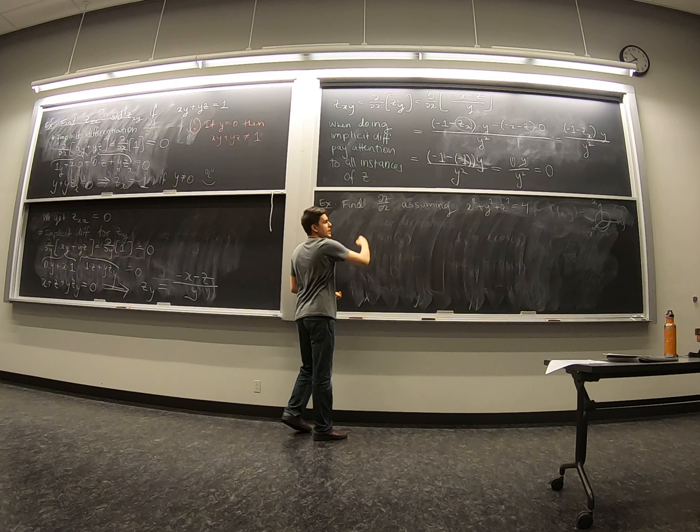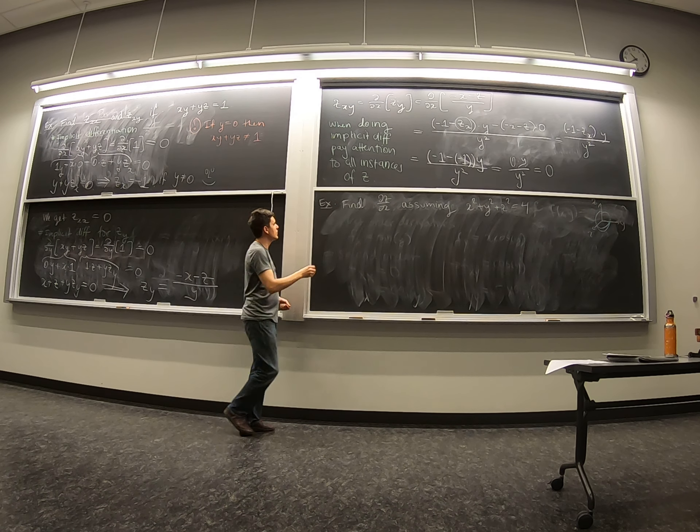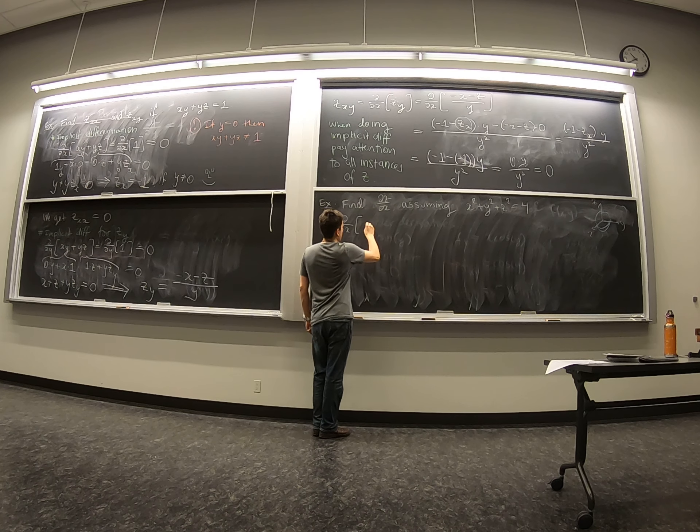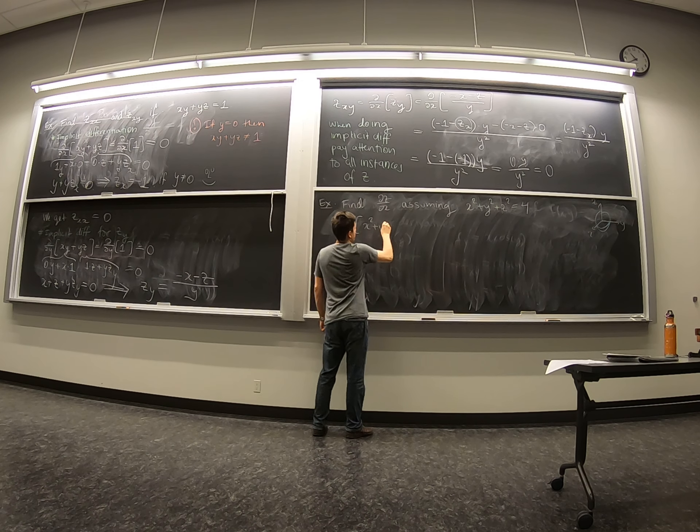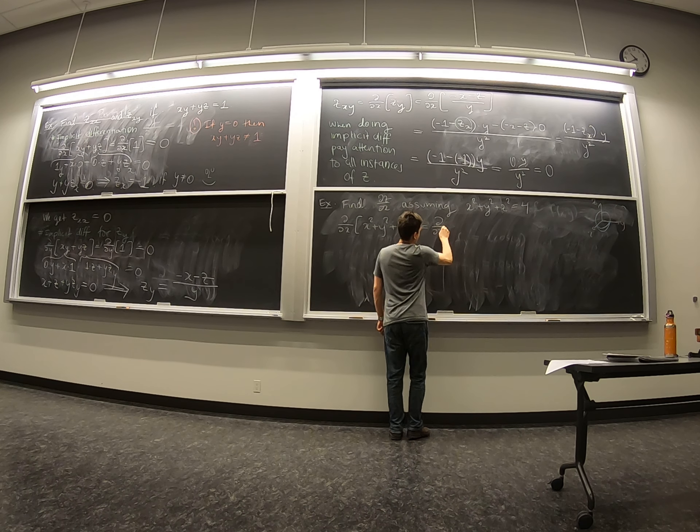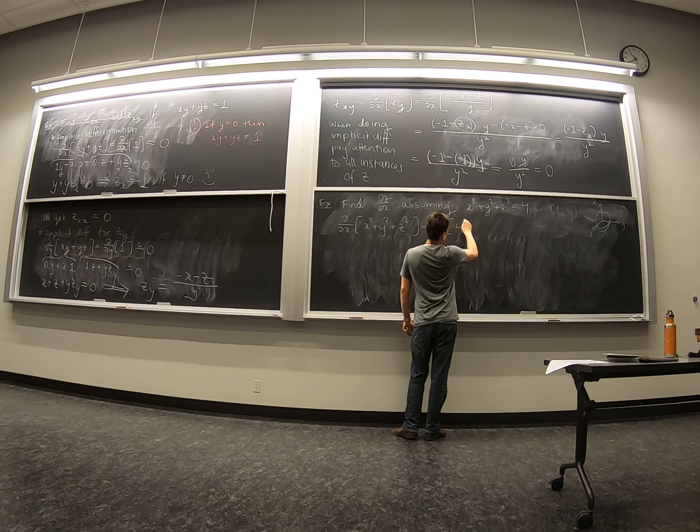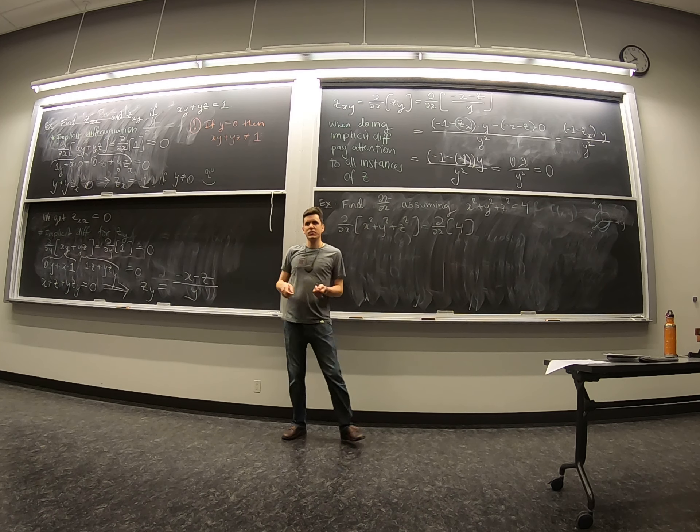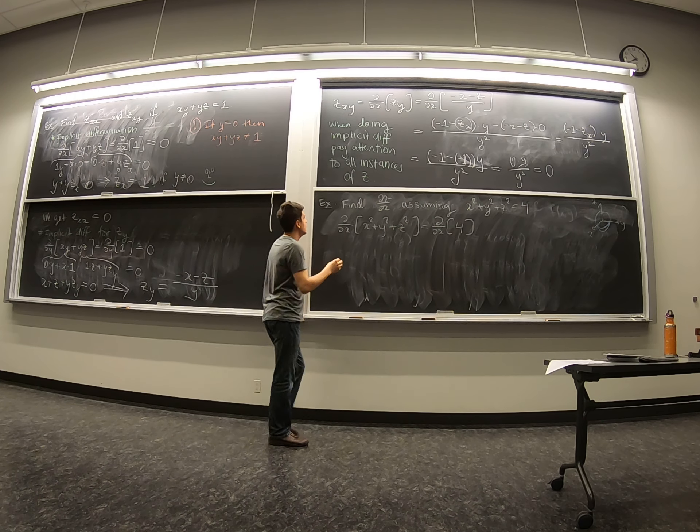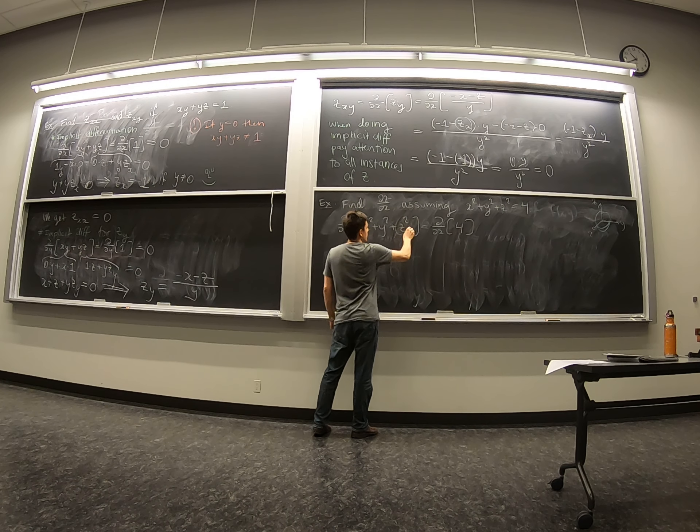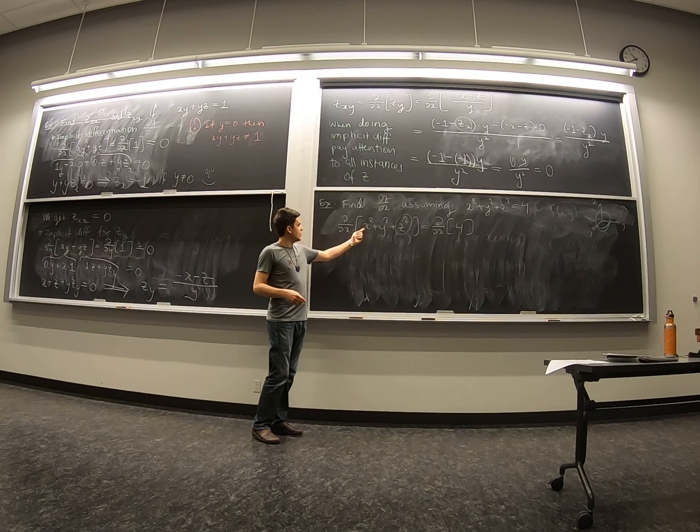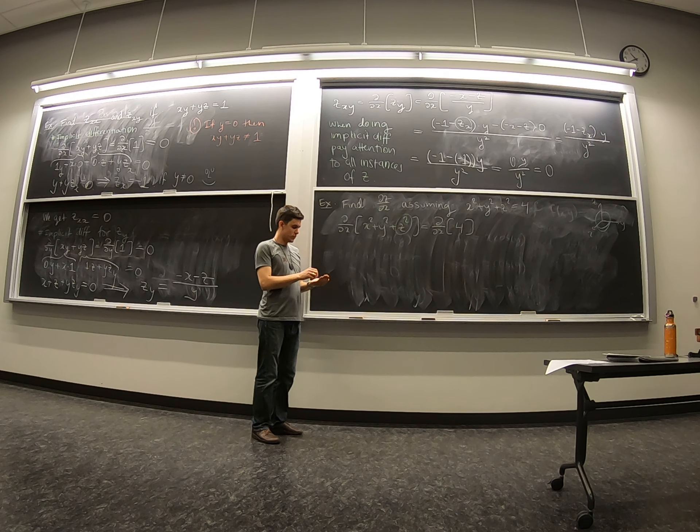So to get the derivative of z in the x-direction, we have to focus on two things when doing implicit differentiation. We have to focus on this variable z - we have to be very careful with that one - and then the variable that we're taking derivatives in terms of.